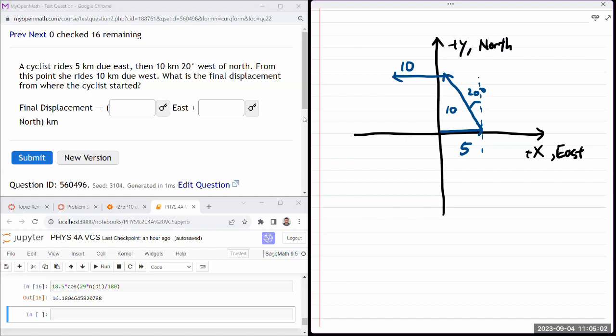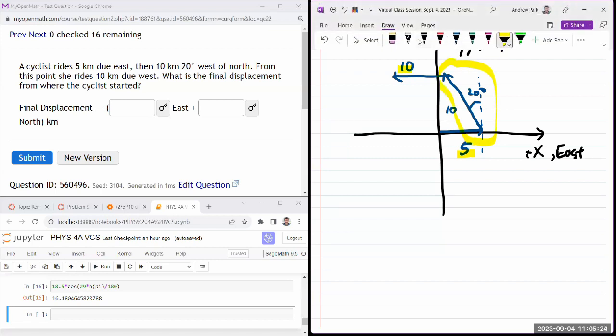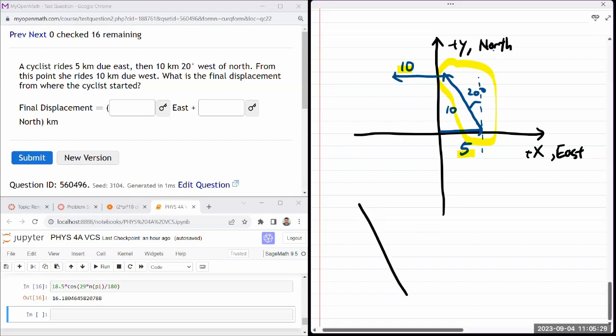So since they are asking for the final answer in terms of the eastern and the northern components, I'll break these motions down into components and add them that way. So for two of the segments, it's super simple. They are already in east to west direction, so I don't have to change anything. It's this part where I need to break it down.